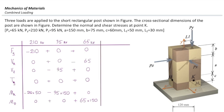Summing all contributions, the total internal forces at the cut section are: FY = negative 210 kN, VX = negative 65 kN, VZ = negative 95 kN. There is no torque — all TY components are zero. MX has two negative contributions that add to negative 24.75 kN·m, and MZ equals positive 9.75 kN·m.